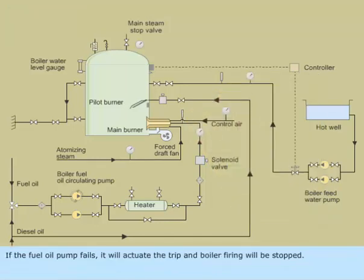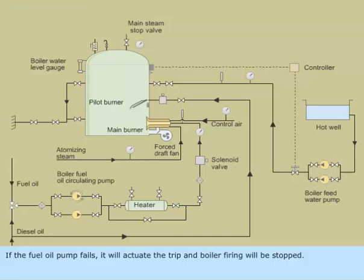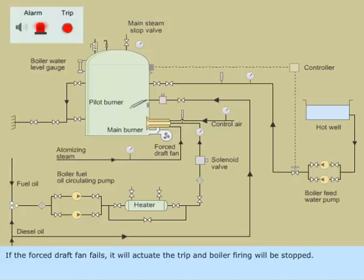If the fuel oil pump fails, it will actuate the trip and boiler firing will be stopped. If the forced draft fan fails, it will actuate the trip and boiler firing will be stopped.